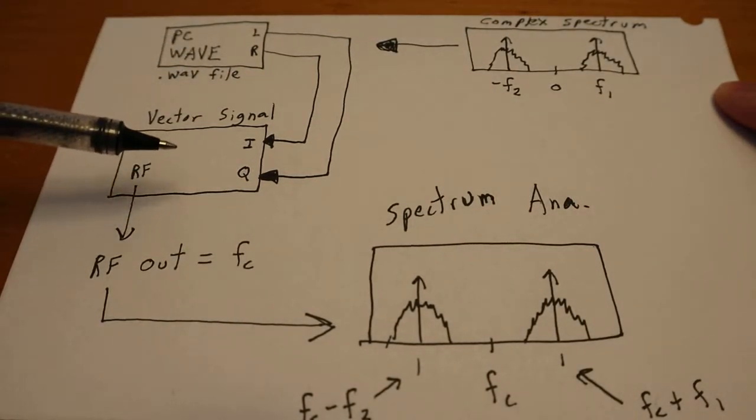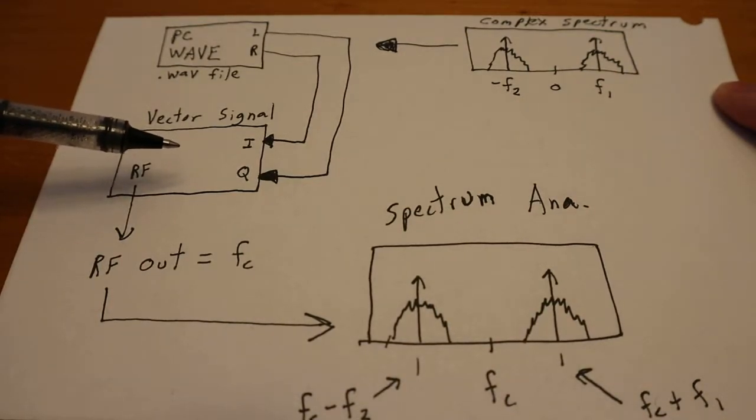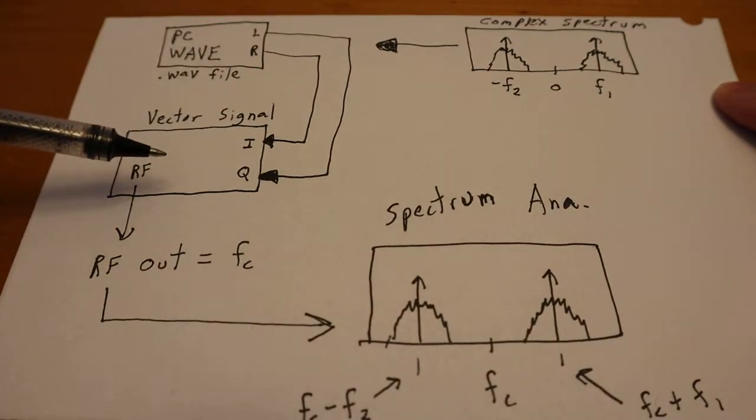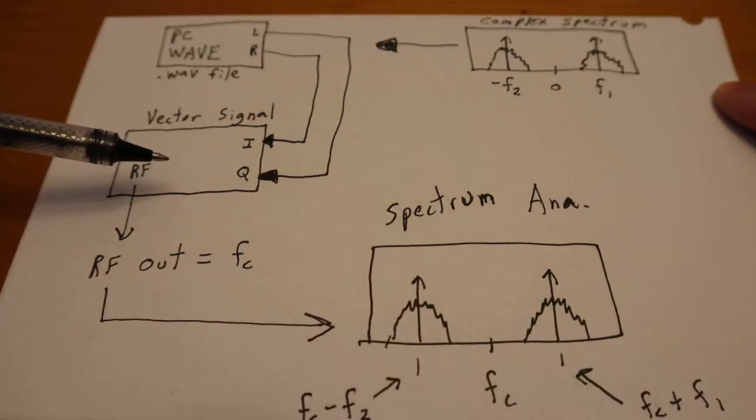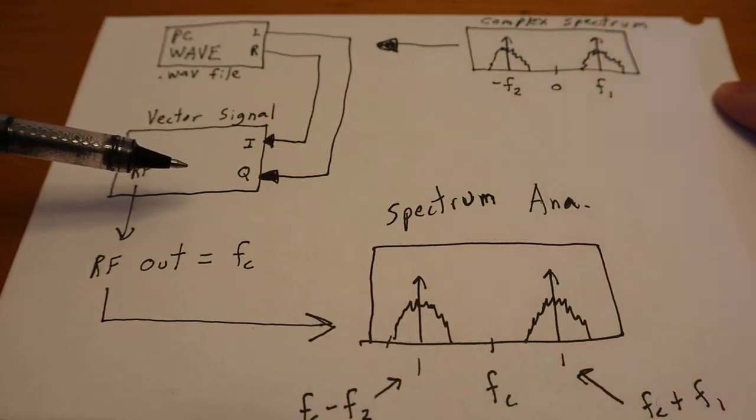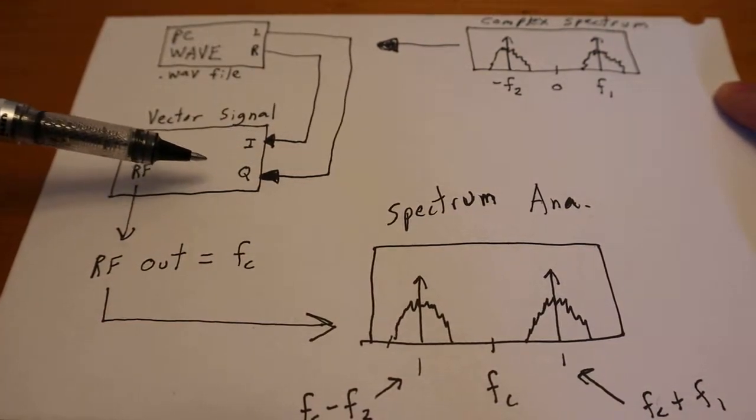But many of these vector signal generators, the old HPs, Rohde and Schwartz make them. And a lot of these you can easily get on eBay. Most people are getting rid of these, especially the older frequency ones, so that they can go higher up in frequency. But the math is still the same.